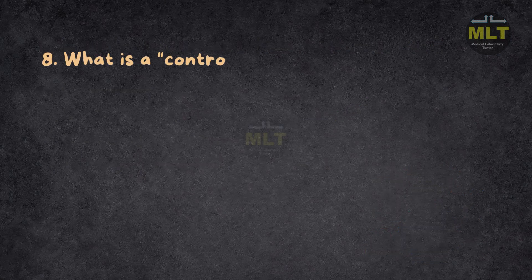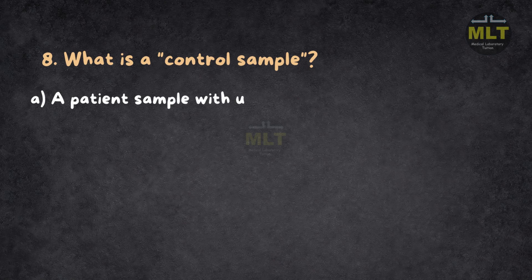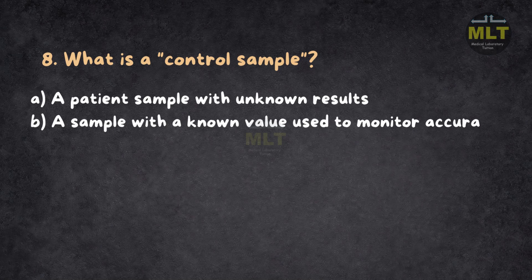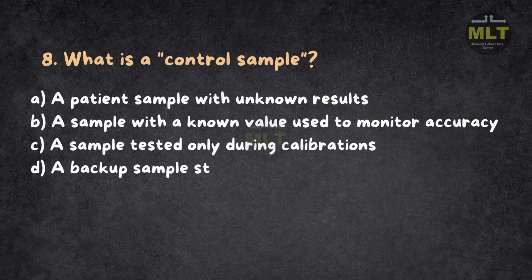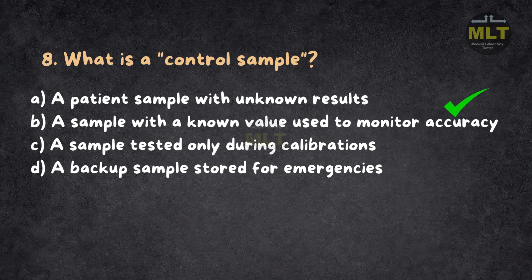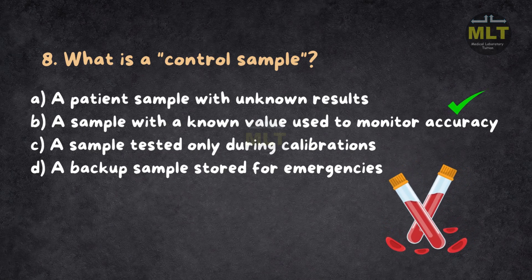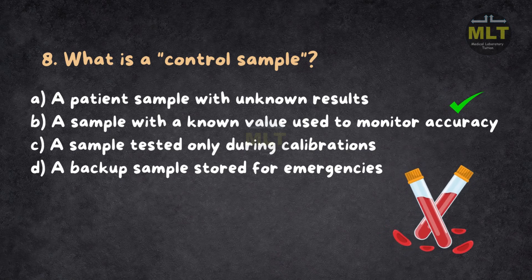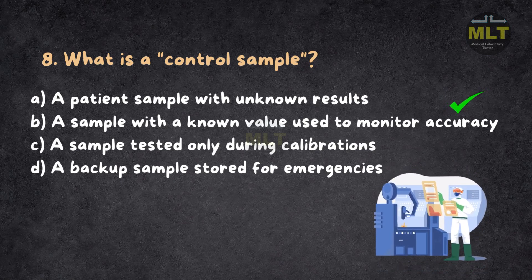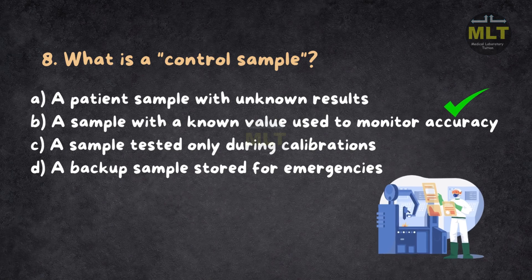Question 8: What is a control sample? a. A patient sample with unknown results. b. A sample with a known value used to monitor accuracy. c. A sample tested only during calibrations. d. A backup sample stored for emergencies. Correct answer: b. A sample with a known value used to monitor accuracy. Control samples contain established values to check if tests are producing accurate and reliable results. They are an essential component of both internal and external QC. Patient samples or backup samples don't serve this purpose directly.